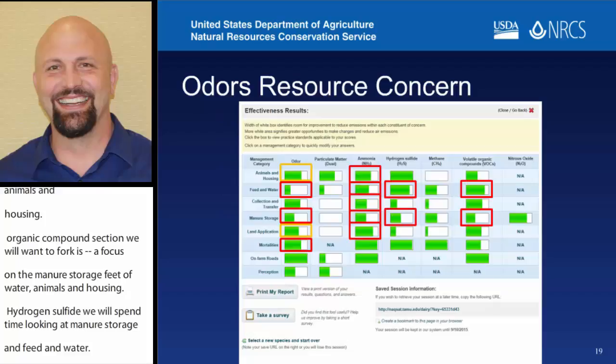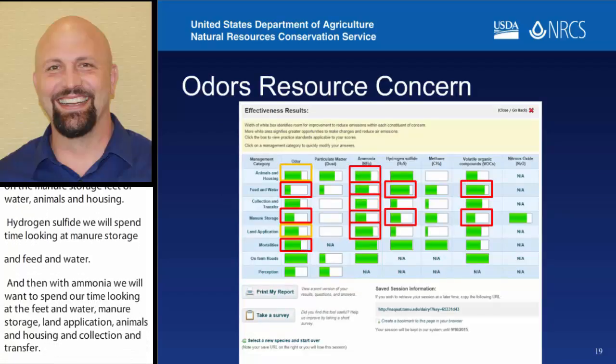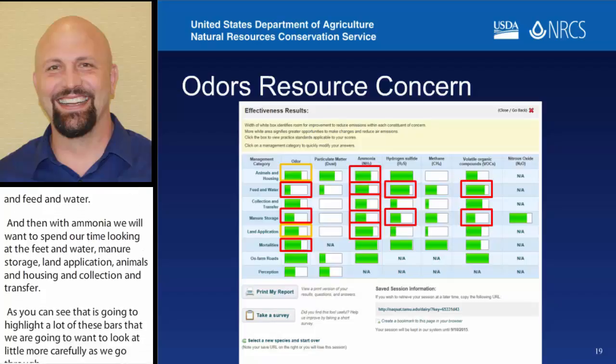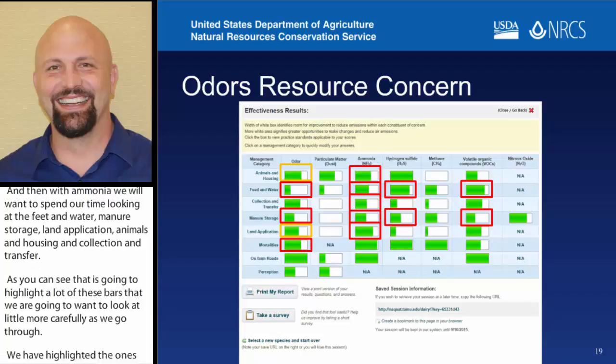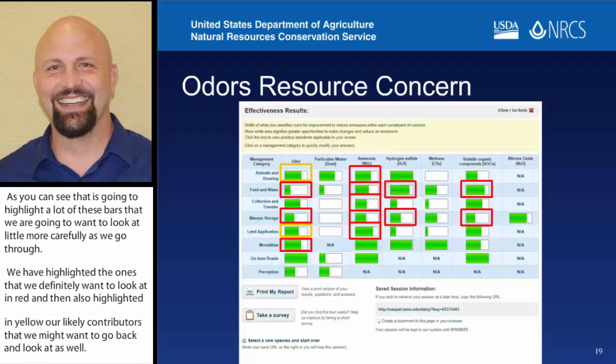As you can see, that's going to highlight a lot of these bars that we're going to want to look at more carefully as we go through here. We've highlighted the ones we definitely want to look at in red, and also highlighted in yellow are likely contributors that we may want to go back and look at as well, particularly if there was a really large room for improvement in those areas.